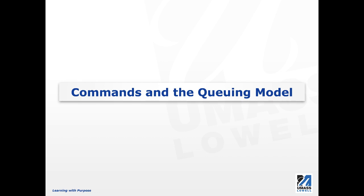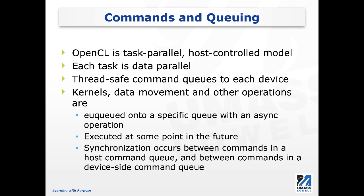OpenCL commands and the queuing model. We spent quite some time talking about OpenCL, the history of it, and also the general concept in OpenCL computing. OpenCL is a task parallel host controlled model. Kernel is the way that OpenCL performs task parallel execution. We also spent quite some time looking at the APIs that OpenCL framework has, and most of them are called from the host side — that's why we refer to it as a host controlled model. Each of the OpenCL tasks is parallel, meaning that for the same task at any given time, the task actually performs computation on multiple sets of data.